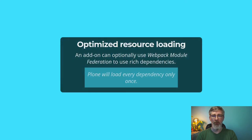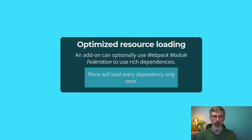If you want to go a step further, you can have optimized resource loading. Thanks to Webpack Module Federation, it's possible to use rich dependencies like UI libraries or any CSS or JavaScript resources you want — as long as it's installable from npm, you can use it. You would declare the library with Webpack Module Federation as a shared library, and Plone will make sure that library is only loaded once, no matter how many add-ons are requesting it.